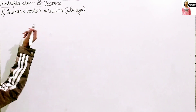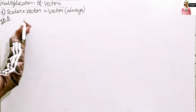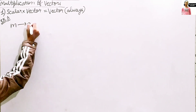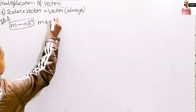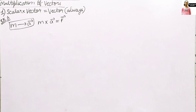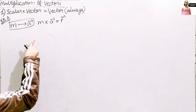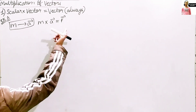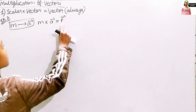Let me give you some examples. Through these examples you can see that multiplying a vector by a scalar always gives a vector — the product of a vector and a scalar is always a vector. The first example is through formulas. Take mass and acceleration: mass into acceleration equals force. Mass is a scalar quantity, acceleration is a vector quantity, and force is also a vector quantity. So by this example, when we multiply a scalar by a vector, we get a vector quantity.